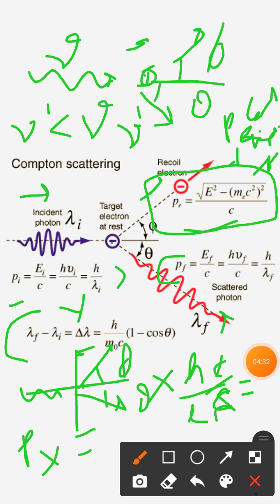And putting this value lambda f and lambda i, we will have h upon lambda f minus h upon lambda i. And after solving this equations, we will introduce angles theta and phi.